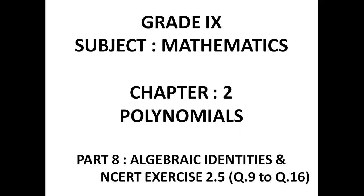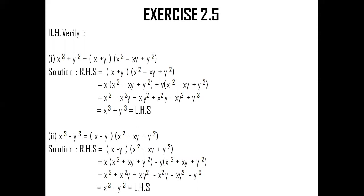Let's solve question number 9. Question number 9 says: verify — first question — x cube plus y cube is equal to x plus y into x square minus xy plus y square. This is actually an identity, but we have been asked to verify. What I have done is taken my RHS, that is the right hand side of the equation, which is x plus y into x square minus xy plus y square, and then multiply the brackets.